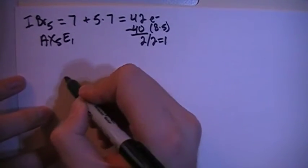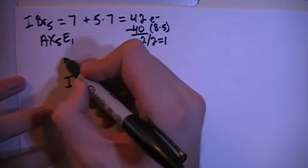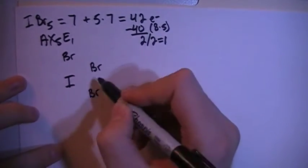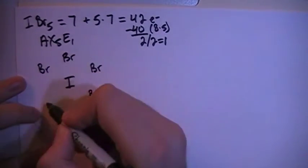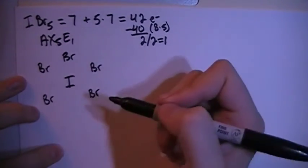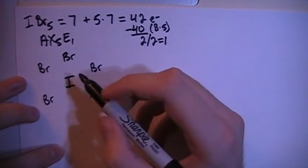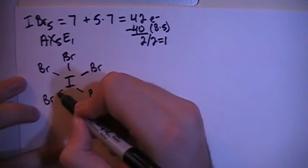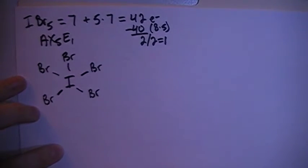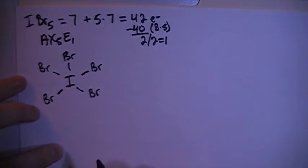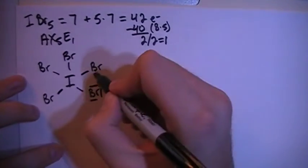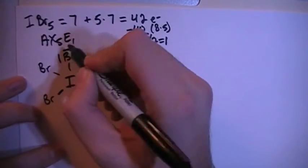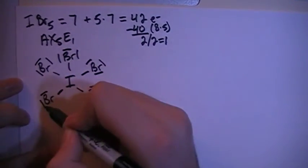So let's go ahead and draw the structure. We have the iodine in the center surrounded by the 5 bromines. And we can go ahead and start by single-bonding all of the bromines to the central iodine, so single bond between all of these. And then we can also fill in each of the octets for the peripheral bromines as well. That way they all have their 8 electrons.